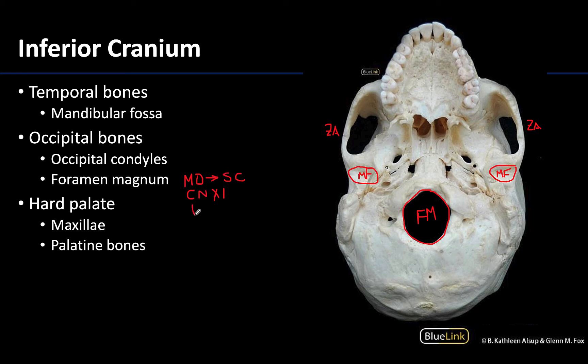You'll also have the vertebral arteries passing through the foramen magnum. As discussed in the vertebrae lecture videos, the vertebral arteries ascend through the transverse foramina of the cervical vertebrae and eventually make their way into the skull region through the foramen magnum.